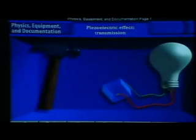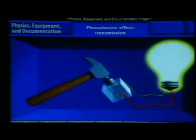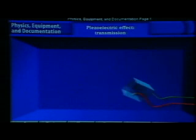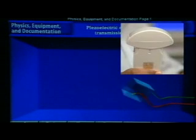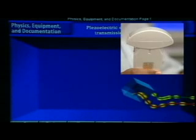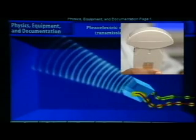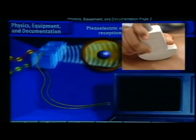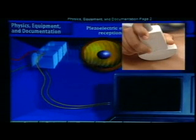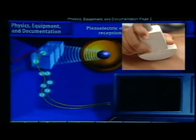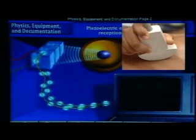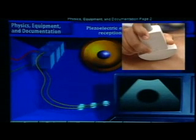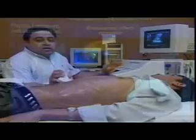Similarly, when we move our transducer over different organs we get an image of those different organs — that is the right kidney outline. The ultrasound transducer contains a piezoelectric crystal. The quality of this crystal is that whenever it is struck with a mechanical force it generates an electrical charge. So by repeatedly applying electrical charges to this crystal we make it vibrate, and that is how we generate a sound wave.